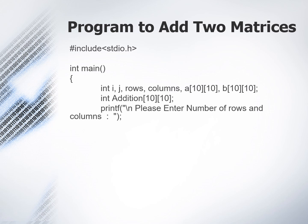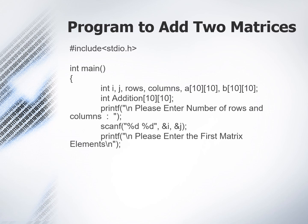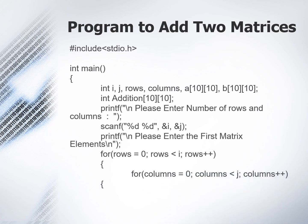Then we will input the number of rows and columns. So we have statements to input the number of rows and columns. After that we have to take the input of all the elements of the first matrix and the second matrix. So first we go through the input for the first matrix. We have a for loop: for rows equals 0, rows less than i, rows plus plus. Then there is a nested for loop: for columns equals 0, columns less than j, columns plus plus. Then we have the input statement: scanf percentage d, and A rows columns.